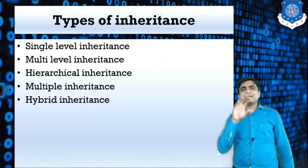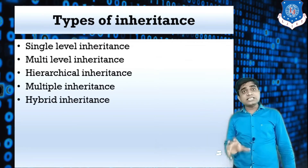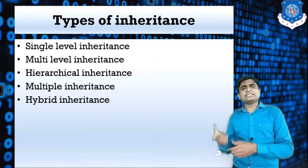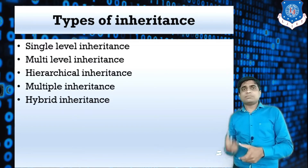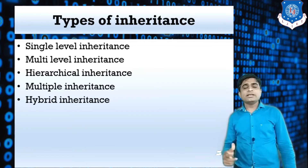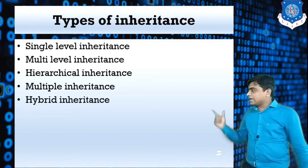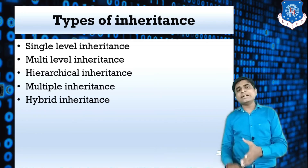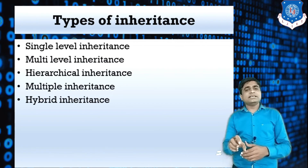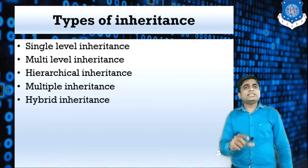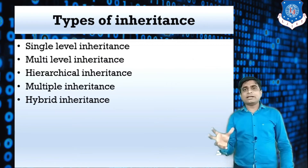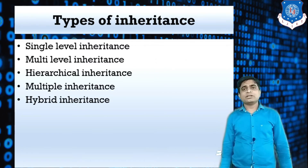In multiple inheritance, class A and class B exist, and class C can access the data of both A and B. But this structure is not supported in Java — that is an important point. Multiple inheritance is not supported in Java. However, this type of structure with classes A, B, and C can be implemented in Java with the help of an interface, which we will discuss later.